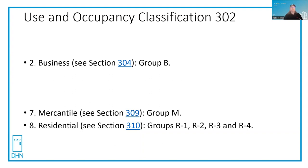A business occupancy is an office building — it's used for the transaction of services. A mercantile, Group M, is a store, which is for the sale of goods instead of services. So they're very similar occupancy types.